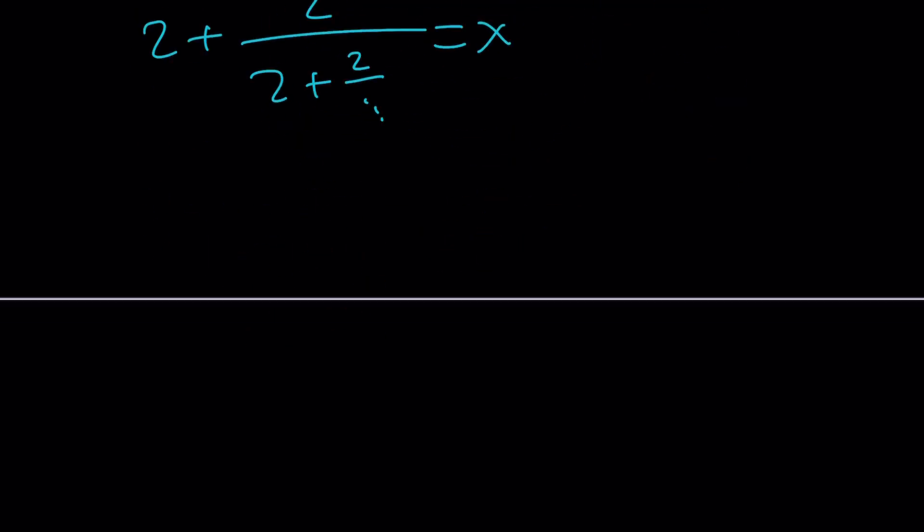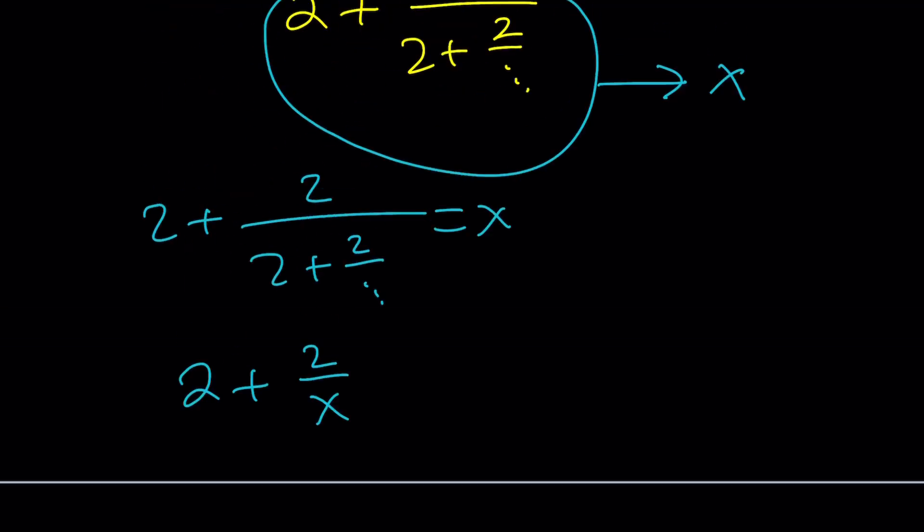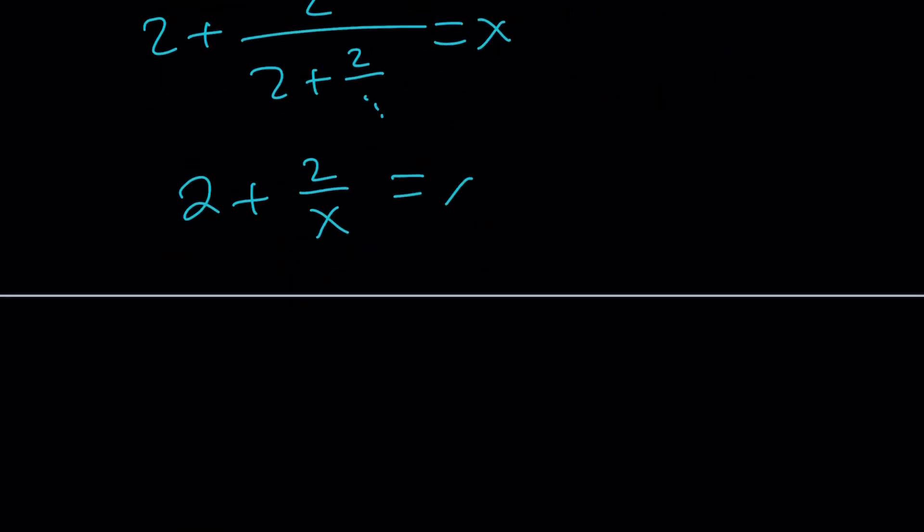So, I'm going to write it as an equation: 2 plus 2 over x equals x. And then this gives us a quadratic equation after multiplying both sides by x, not by 2, of course.